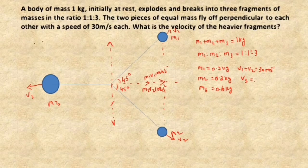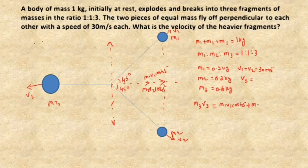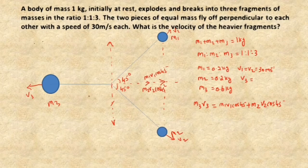We apply the law of conservation of momentum along the horizontal direction. The initial momentum before the explosion is zero, so the final momentum must also be zero. Therefore m3v3 must equal the horizontal components: m1v1·cos45 + m2v2·cos45. The momentum component m3v3 must equal the total horizontal momentum m1v1·cos45 + m2v2·cos45.